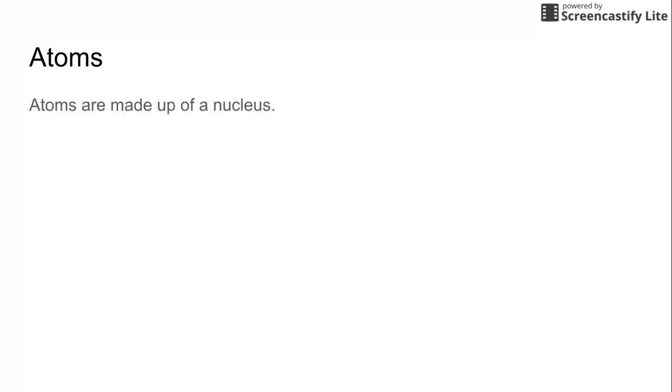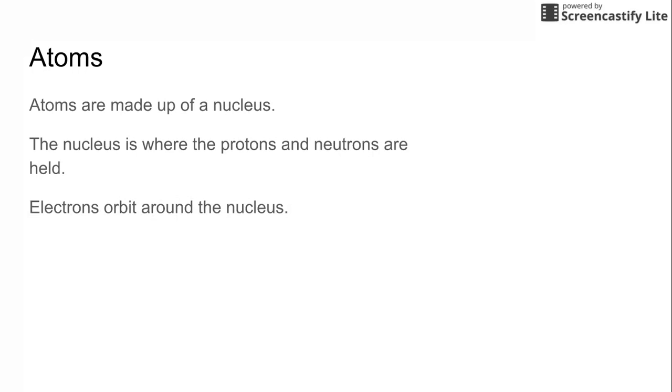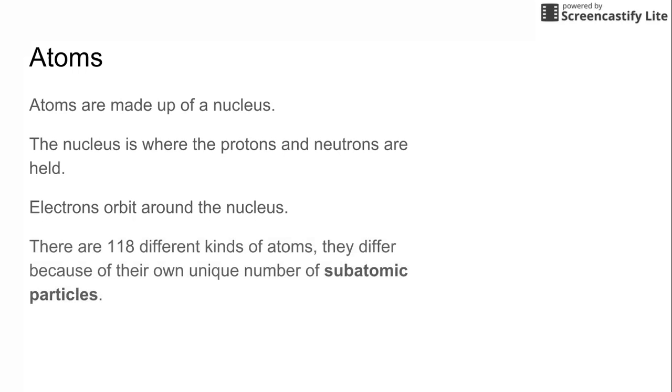So atoms are made up of a nucleus, and the nucleus of an atom is where the two things called protons and neutrons are held. And then there's also something that orbits around the nucleus, and we call these electrons. There are 118 different kinds of atoms, and they differ because of their own unique number of subatomic particles. And when we talk about subatomic particles, we're talking about that proton, neutron, and electron.